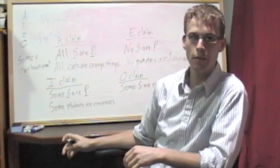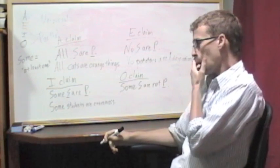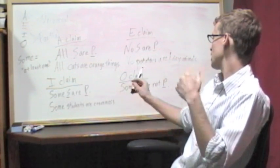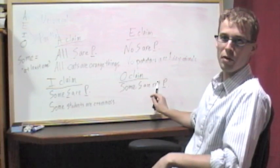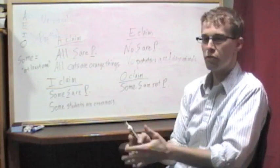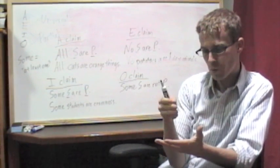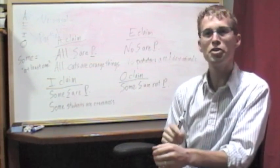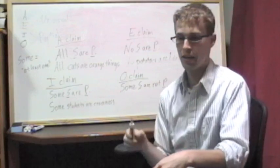This is very similar to an I claim, except you've got this negative part here. Some are not. So, there's a difference between them. We're saying that at least one member of the subject category is not also a member of the predicate category.